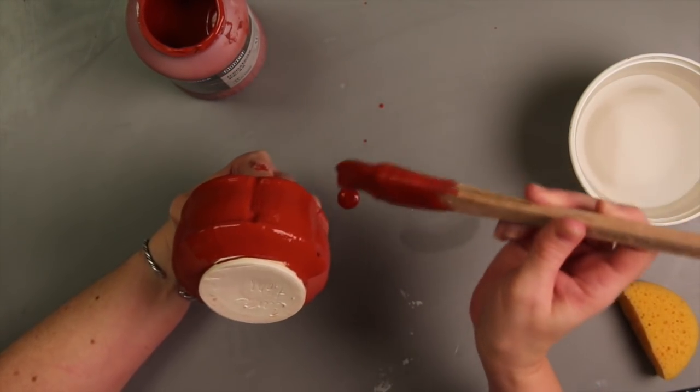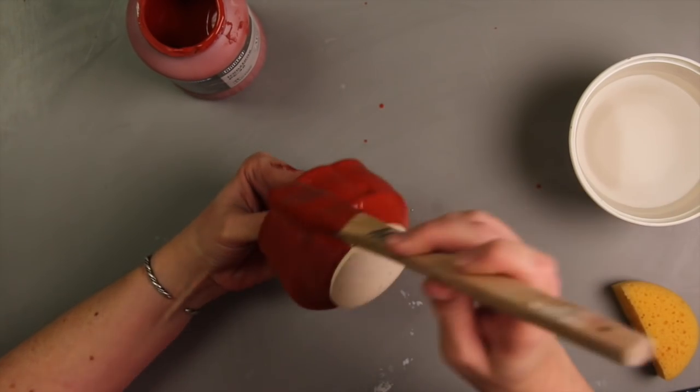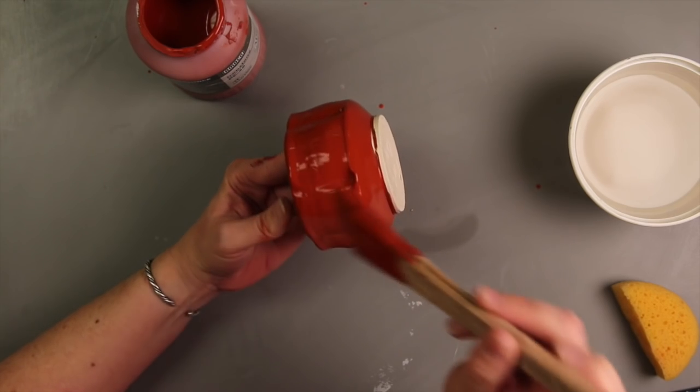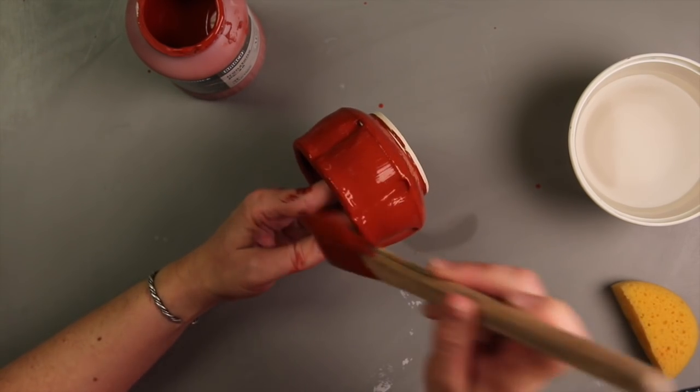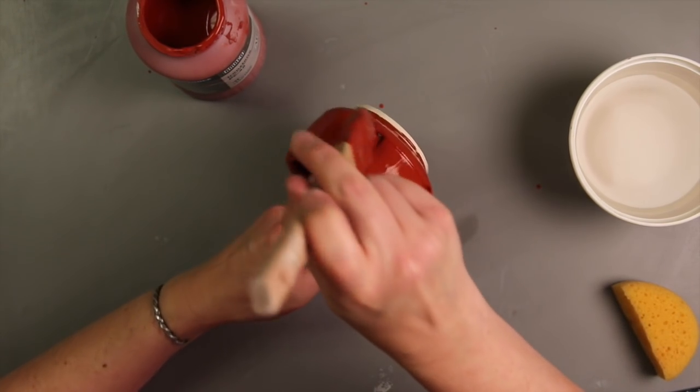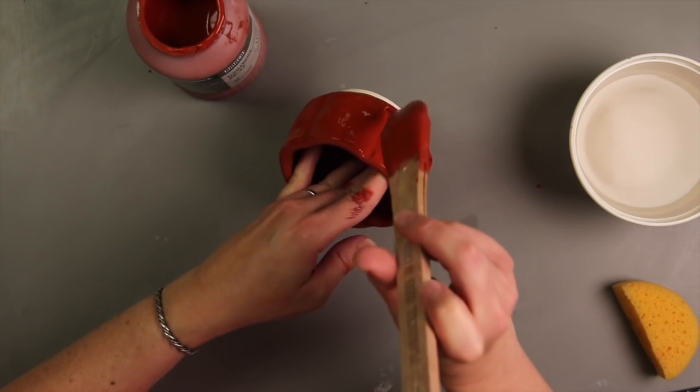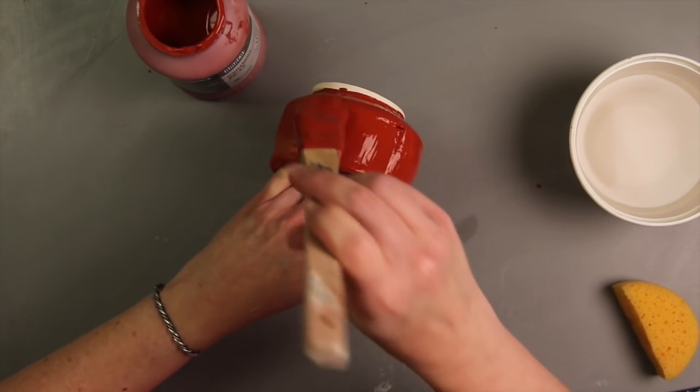Once the glaze is dry, I remove the rubber band and fire the cups in an electric kiln at medium speed to cone 6 with a self-supporting witness cone. I usually put a 2-minute hold on the firing to make sure the cone bends to a perfect 90-degree angle. I let the kiln cool normally.